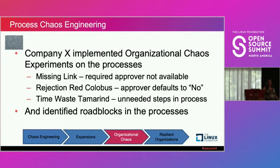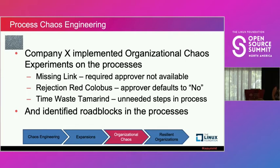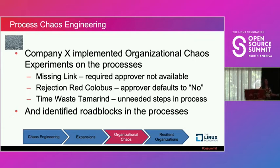Do they get stuck? Does the process stall? Then there's Time Waste Tamarin — the last one — which is a huge problem in most companies. There are unneeded steps in the process. You can test this by adding new steps — though I don't recommend it since it's much easier to add steps than remove them — or by enforcing steps that people tend to ignore. The key with this one is looking at the ability of your organization to adapt in an agile way and change their processes to make more sense. Can people identify and circumvent those optional steps through an approved process?